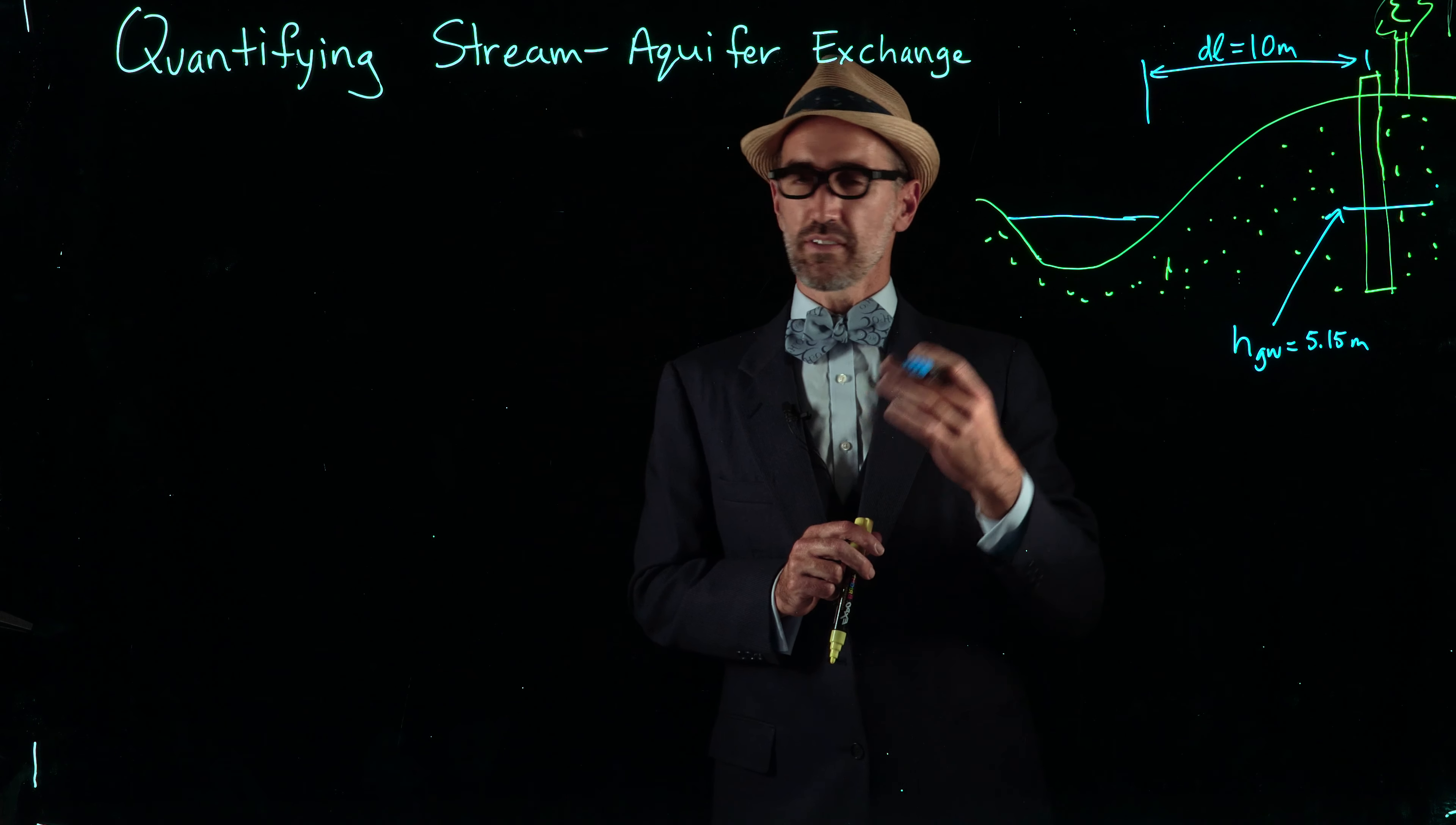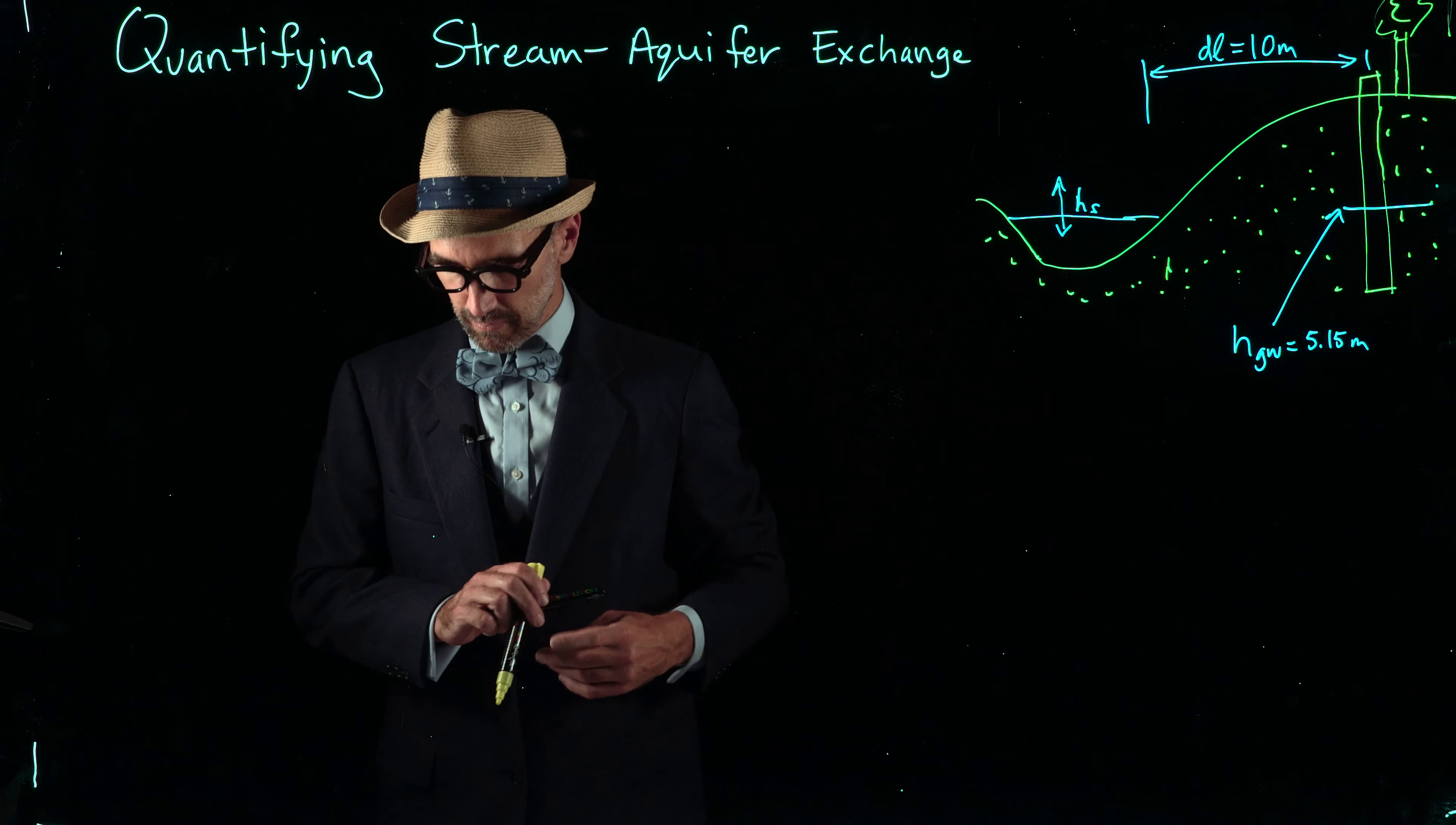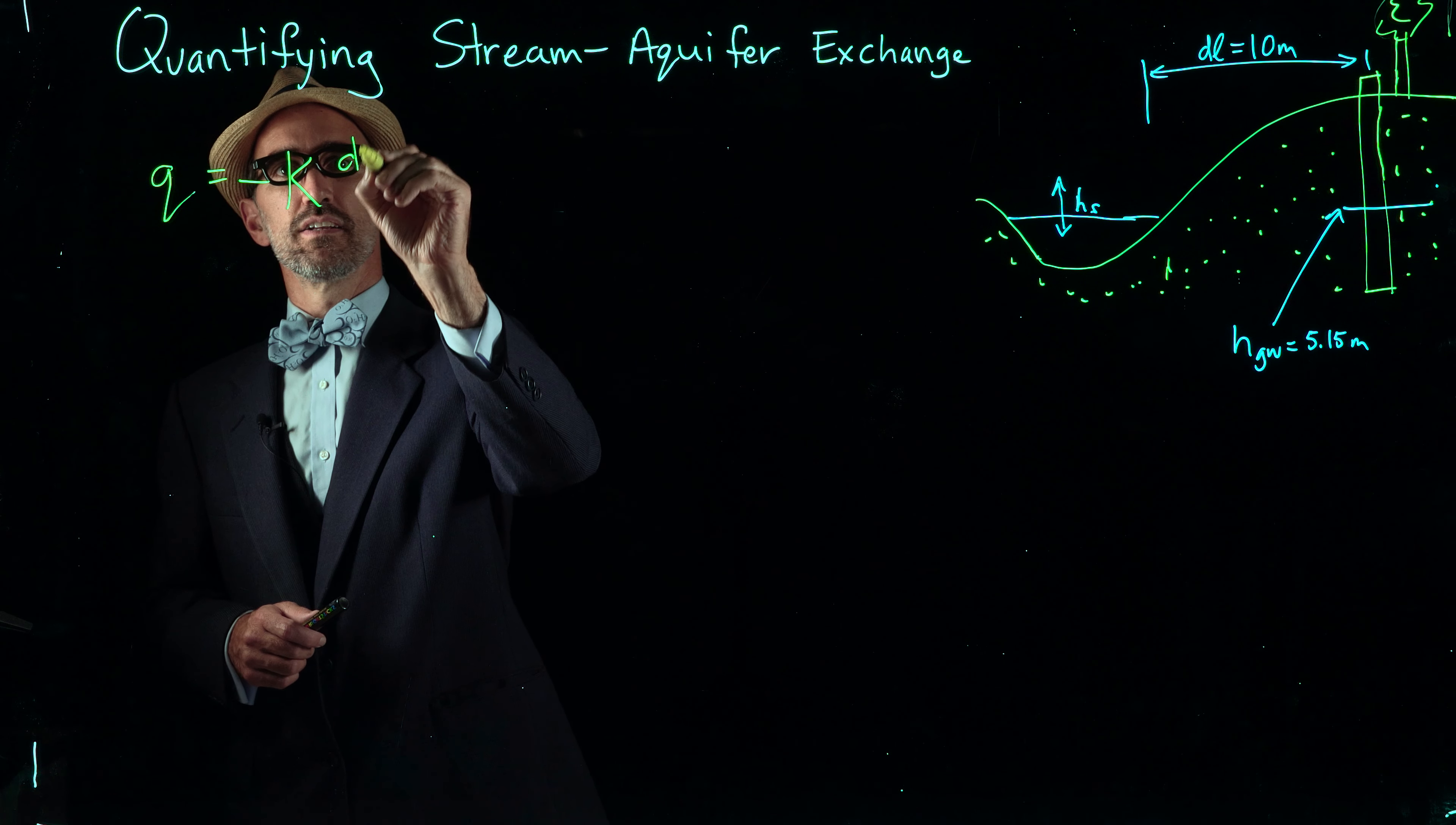We also know that the height of the river went up and down as you'd expect in the storm. We have our h of s and that will be different at the different points of the storm. What we want to calculate is the flux using Darcy's law. This is the one-dimensional form: small q, because this is an areal flux, is equal to negative k dh/dl.